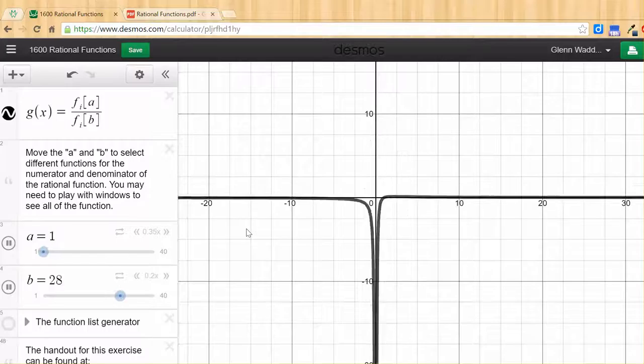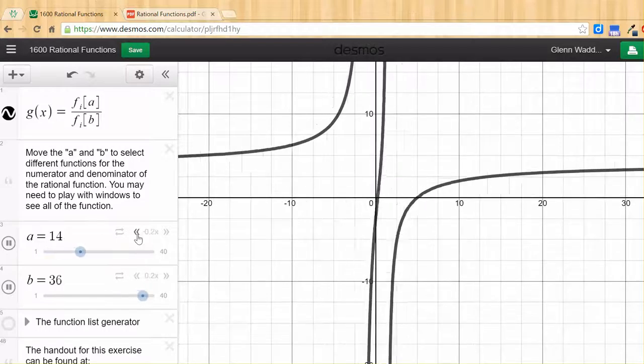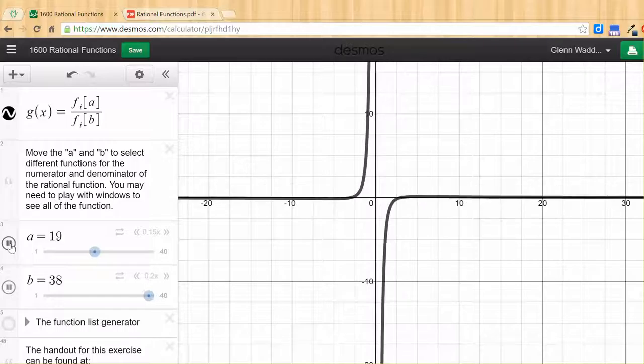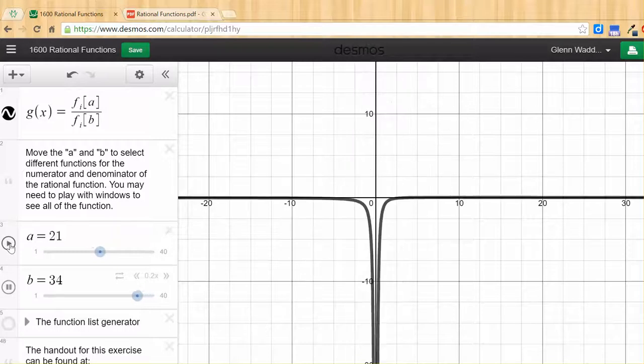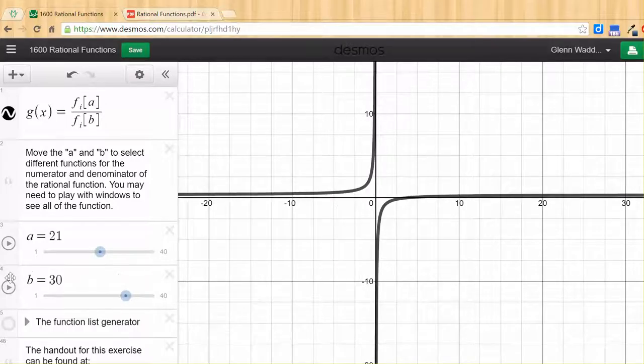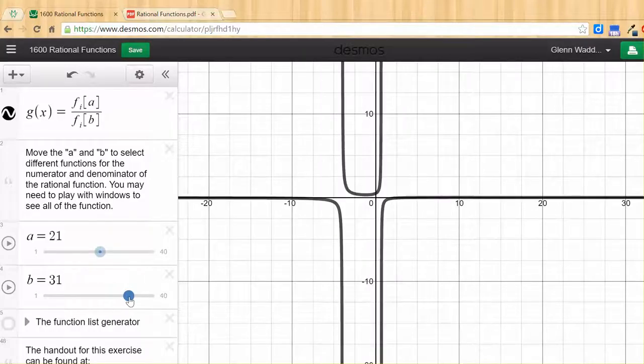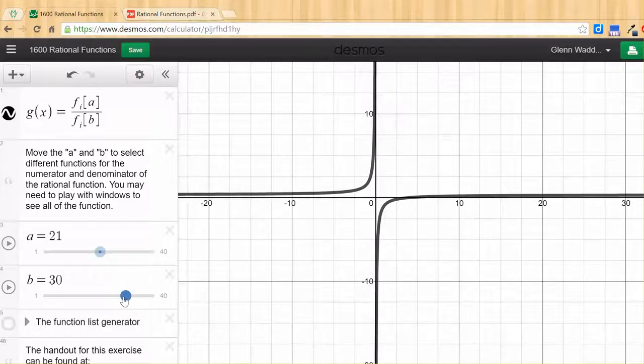And I have to ask, what the heck is going on with these graphs? How is this graph, that's essentially flat, a straight line with a little blip in the middle, related to this graph that's in three different pieces and is all vertical? And how is that related to this graph that's in two pieces?